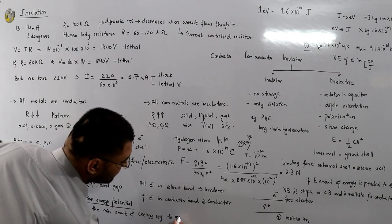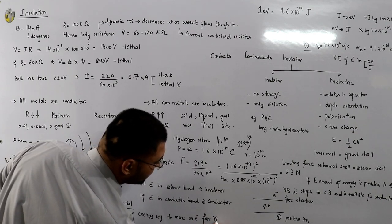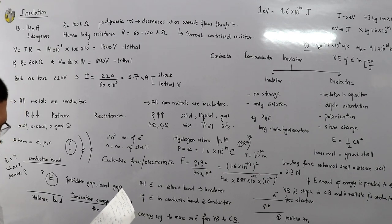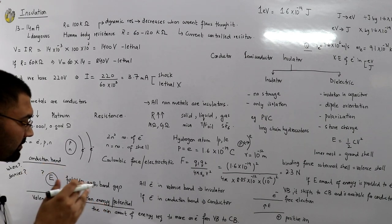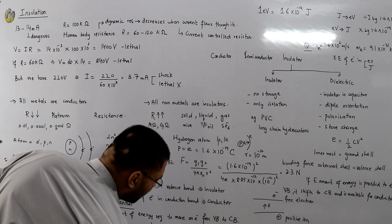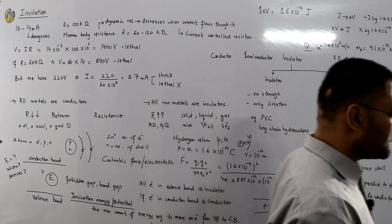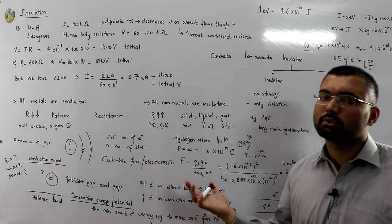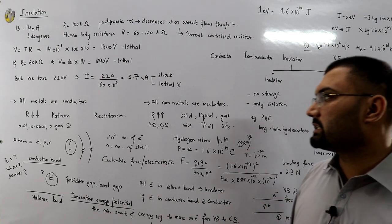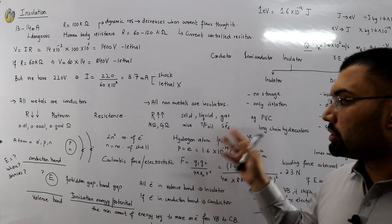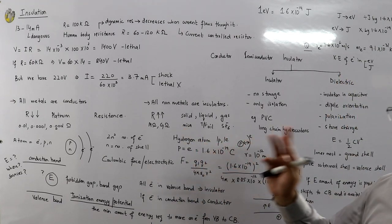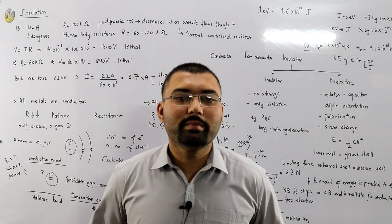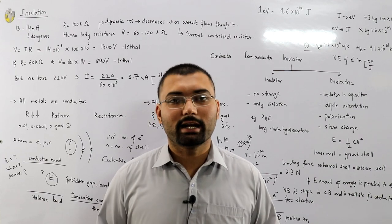Ionization energy is defined as the minimum amount of energy required to move an electron from the valence shell of an isolated gaseous atom. In other words, it is the minimum energy required to free an electron — or to shift an electron from the valence band to the conduction band so it is available for conduction, making an insulator behave as a conductor. For the sources of this energy, meet me in the next video. Take care and do subscribe to the channel. Goodbye.